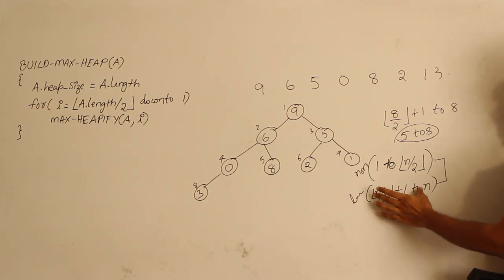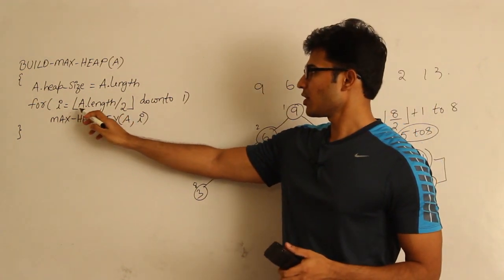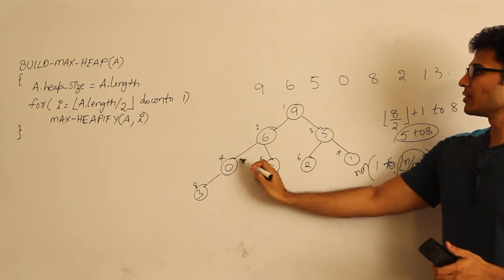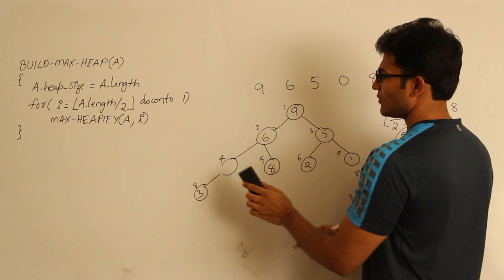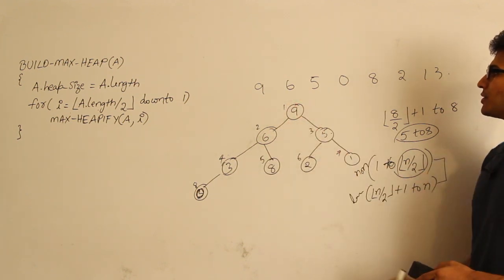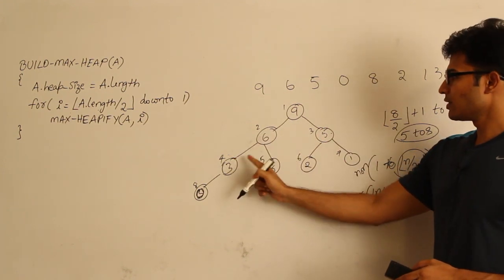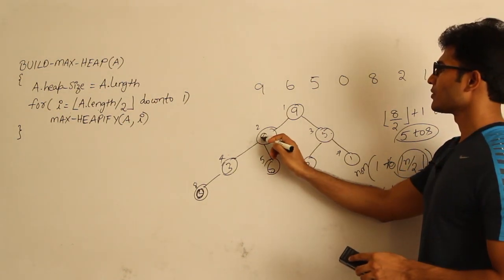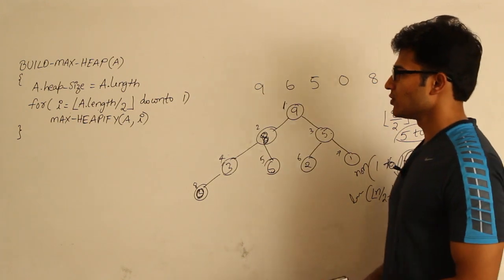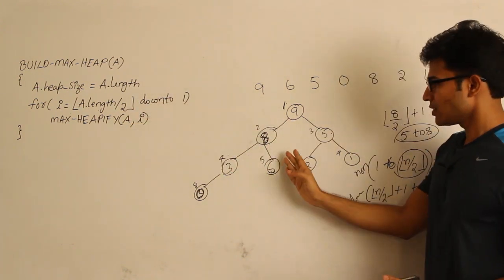We go to every non-leaf one by one, starting from the largest index. The first largest non-leaf is index 4, so we apply heapify there. Then we move to indices 3, 2, and 1. For example, after applying max heapify at index 4, values swap; then at the next node, 6 comes up and 8 goes there. That is how the algorithm proceeds.